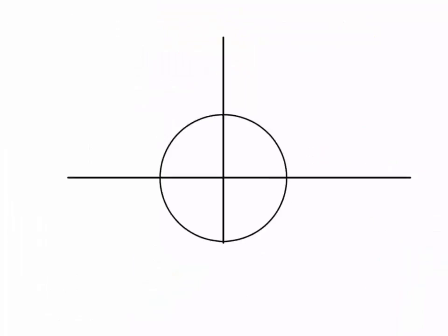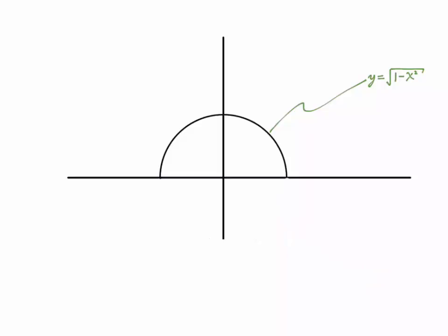The first example I'm going to use for finding a derivative makes use of the circle. The circle consists of two functions: the upper half, y equals square root of 1 minus x squared, and the lower half, y equals negative square root of 1 minus x squared. Let's ignore the lower half for now. Just looking at the upper half function, I'm going to find the slope of the tangent line at the point a comma square root of 1 minus a squared, where a is a particular value of x.